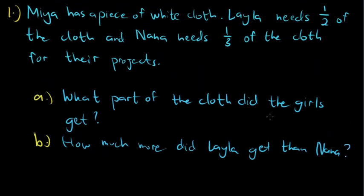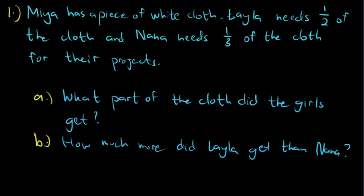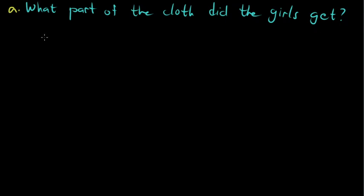Let's go back to the problem. Mia has a piece of cloth. Lila needs one half of it, and Nana needs one third. For letter A, the question is: what part of the cloth did the girls get? To answer this, I need to add the portions that the two girls received. This is my plan — I know the problem, and my plan is to add.